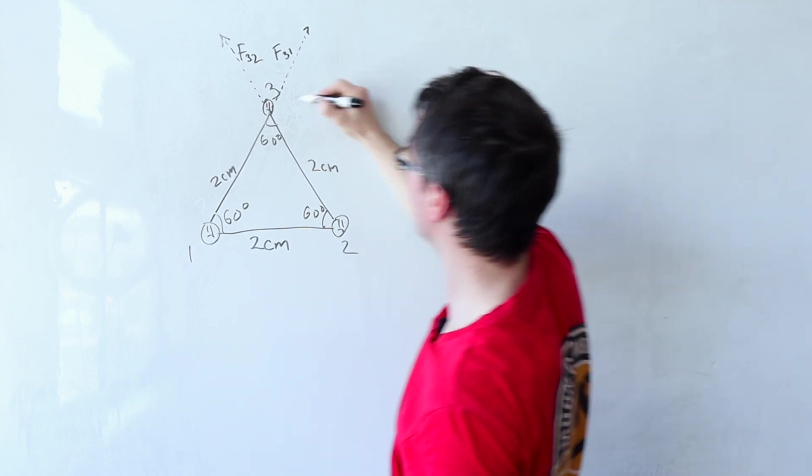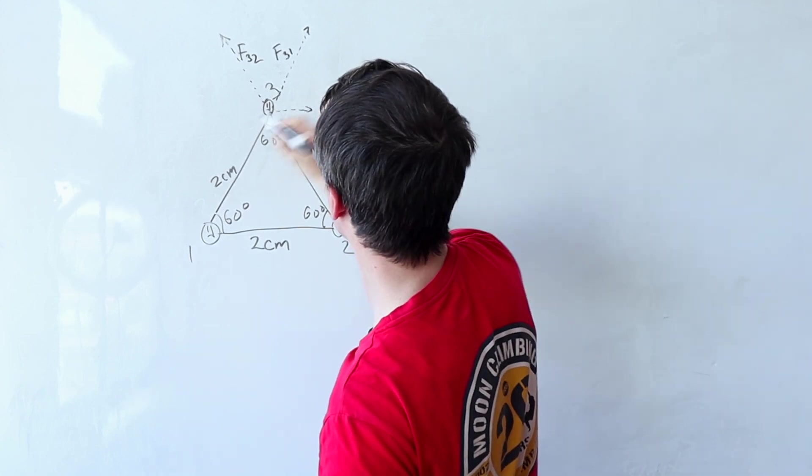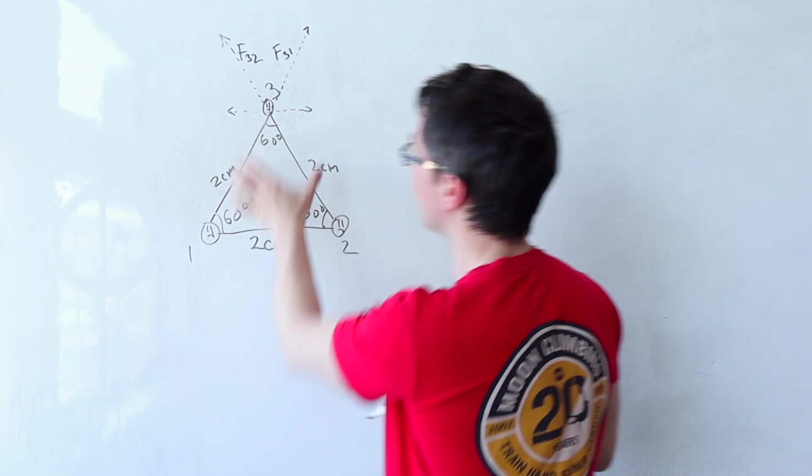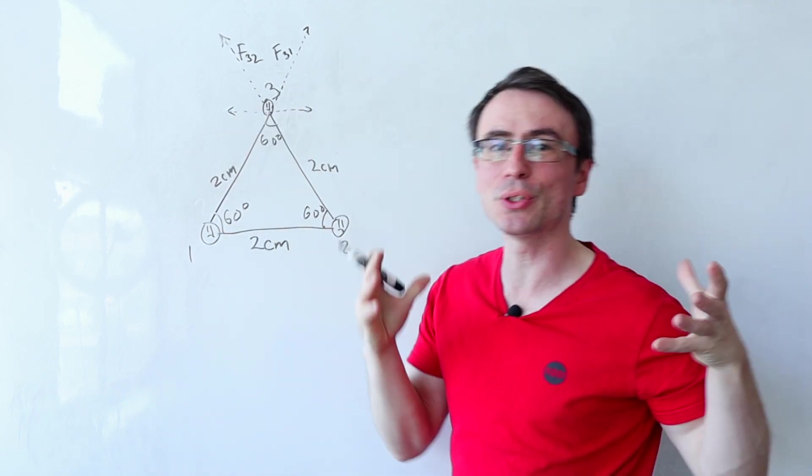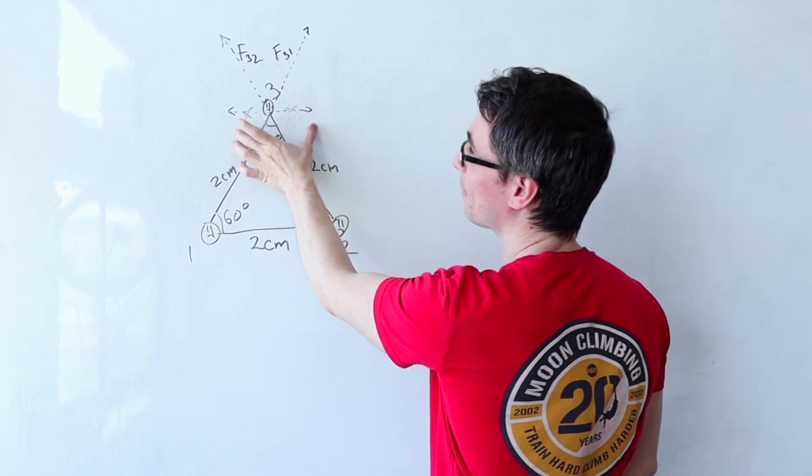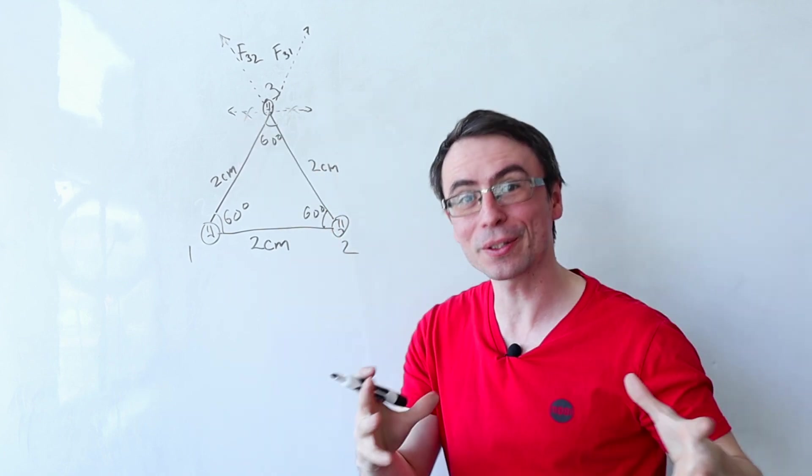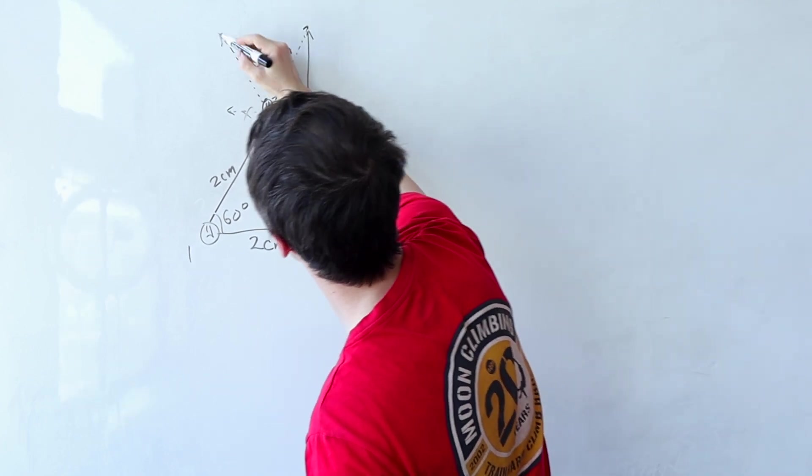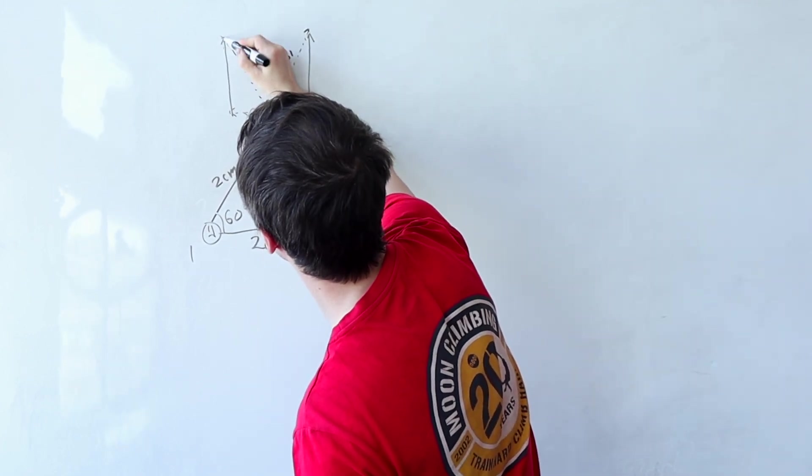Looking at the symmetry of the system we can see that the horizontal components of these two forces will be equal and opposite and we do not need to worry about them. They will end up cancelling out. The vertical components though will need to be added up and they're going to be exactly equal.